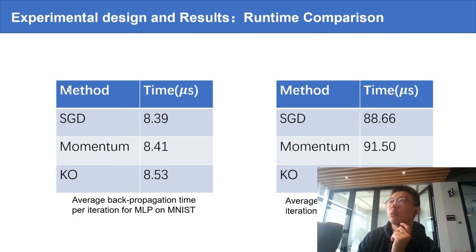We also compare the runtime. We compute the average backpropagation time per iteration for multi-layer perceptron on MNIST and ResNet-18 on CIFAR-10. We can see that Kalman Optimizer works a little bit slower than SGD and momentum method, but with comparable time complexity.